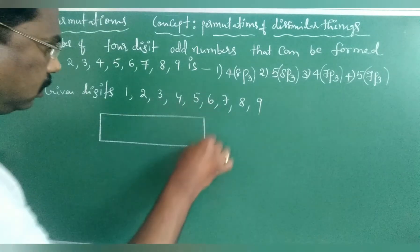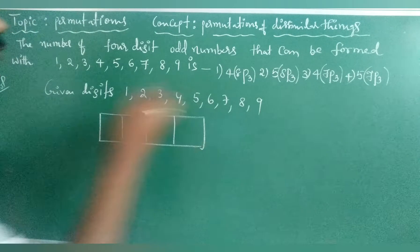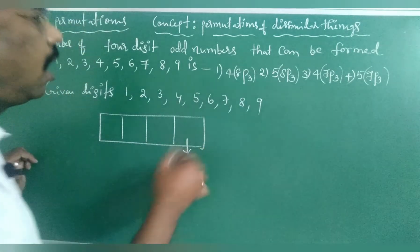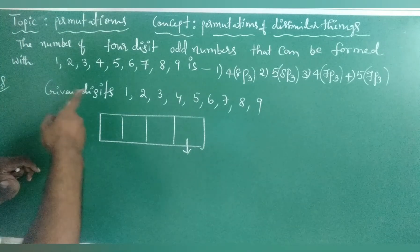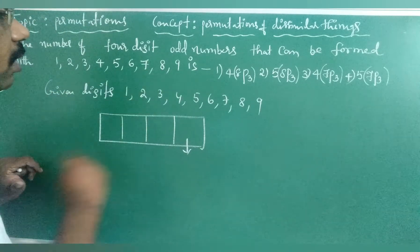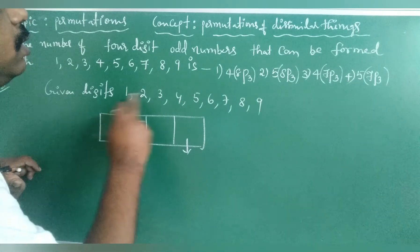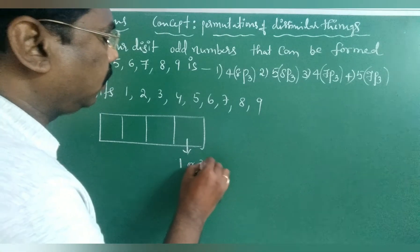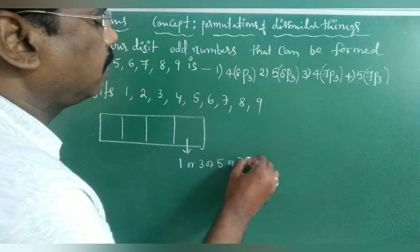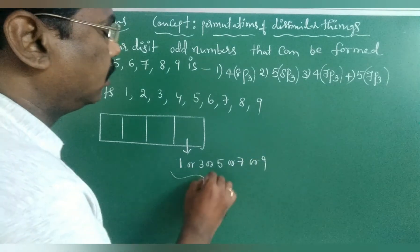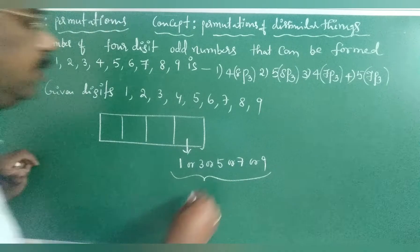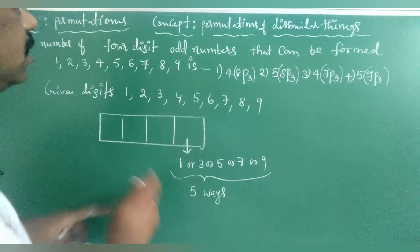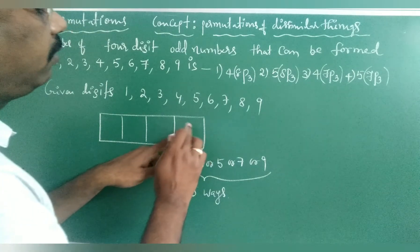For a 4-digit odd number, we take 4 places. The unit place must be filled with an odd digit. The odd digits from the given set are 1, 3, 5, 7, 9 — so the unit place can be filled in 5 ways.